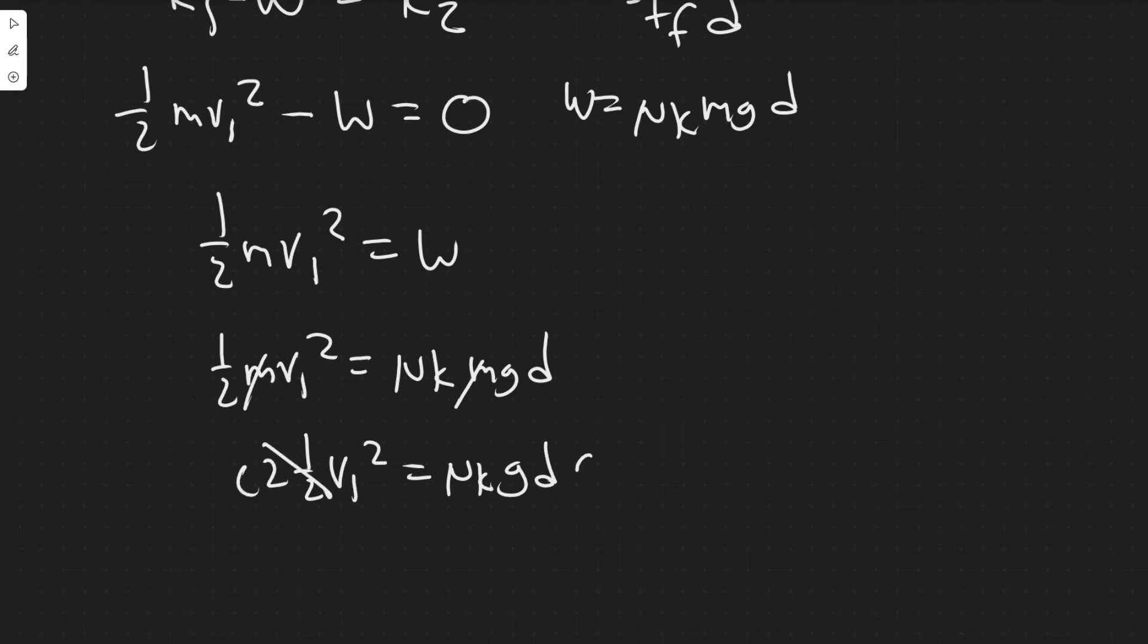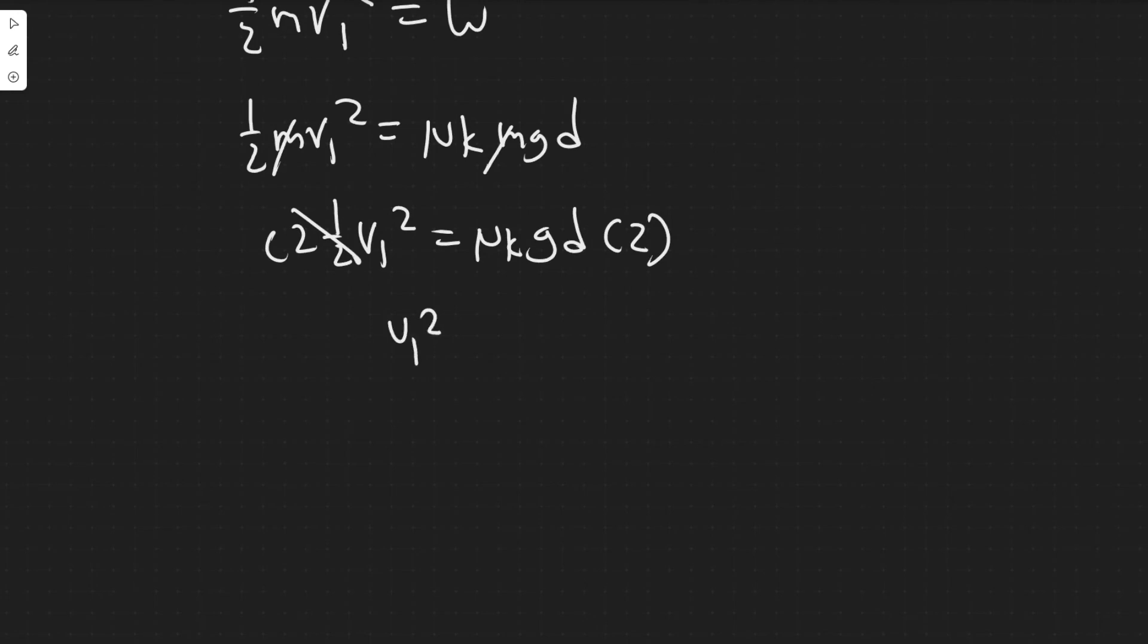What we have is 1/2 v1² = μk·g·d. Multiplying both sides by 2 gives us v1². We're getting it by itself because we're trying to solve for this velocity. Square root both sides to get rid of that squared. So v1 essentially equals √(2·μk·g·d), and we know all these values.